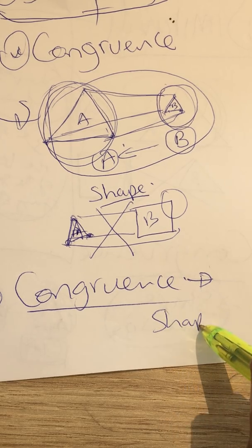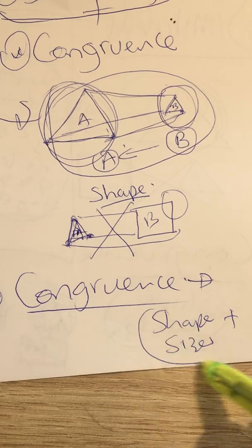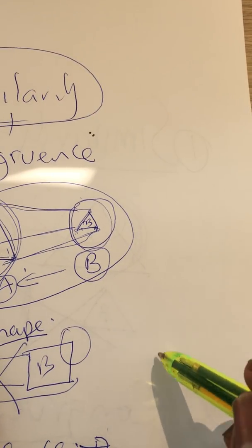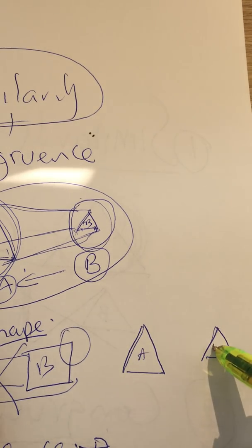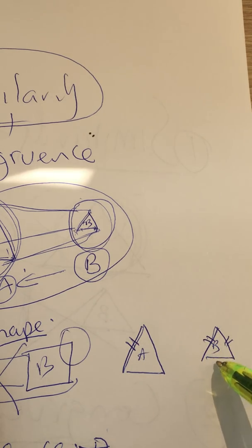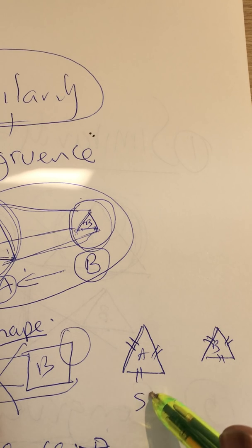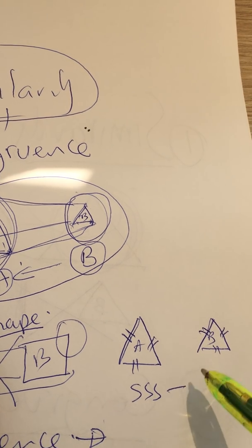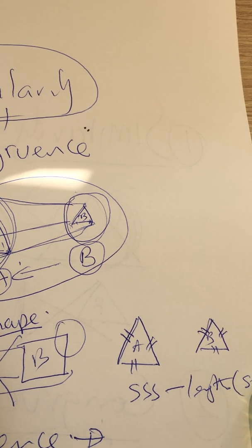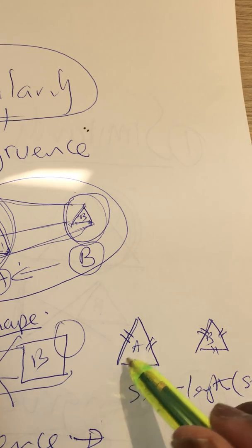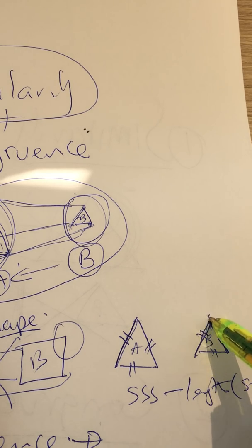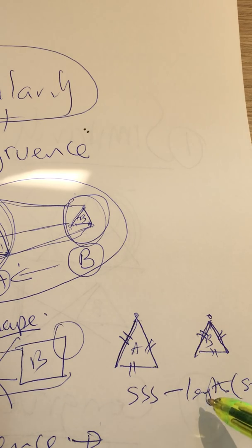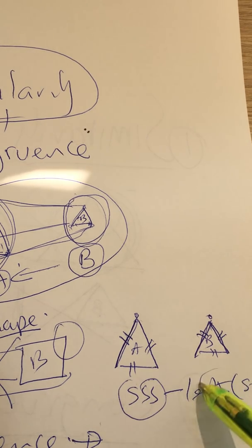For example, we can have triangle A and triangle B. Now if that side is equal to that one, and that one is equal to that, and this side is equal to that—if all the sides are equal in terms of length or sizes, and they are similar, for example this one is slanting like that, that one is slanting like that, and they have three vertices, if the lengths are the same, then we say that triangle A is similar to triangle B.